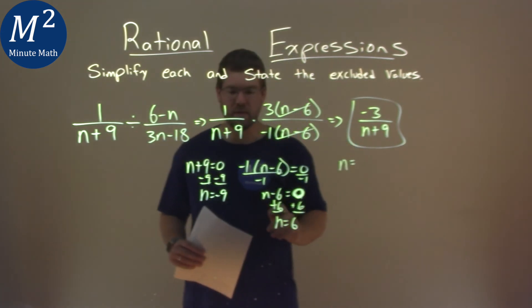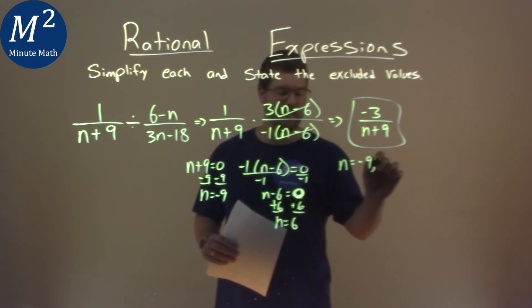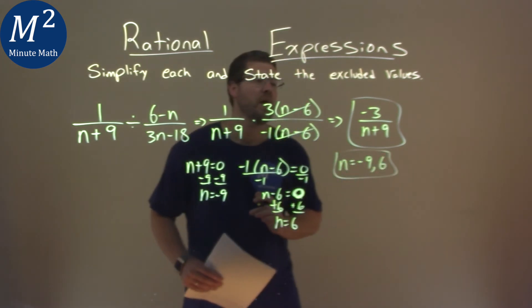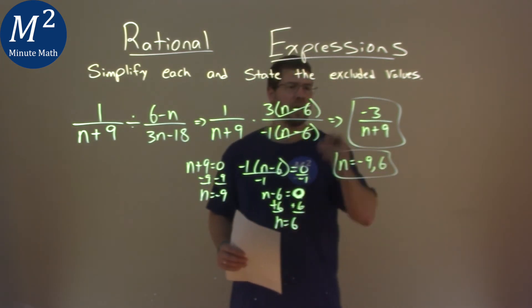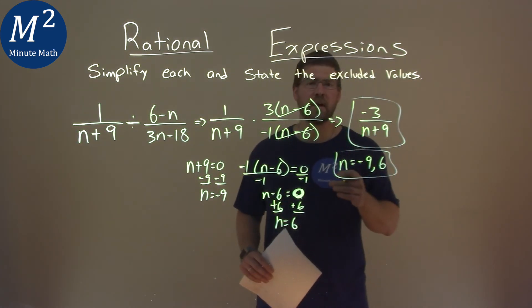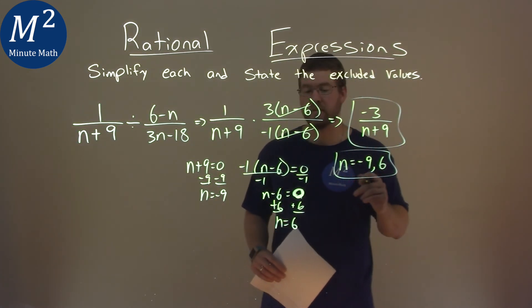And so my two excluded values are negative 9 and positive 6. And so my final answer, simplified, is negative 3 over n plus 9, and the excluded values are negative 9 and positive 6.